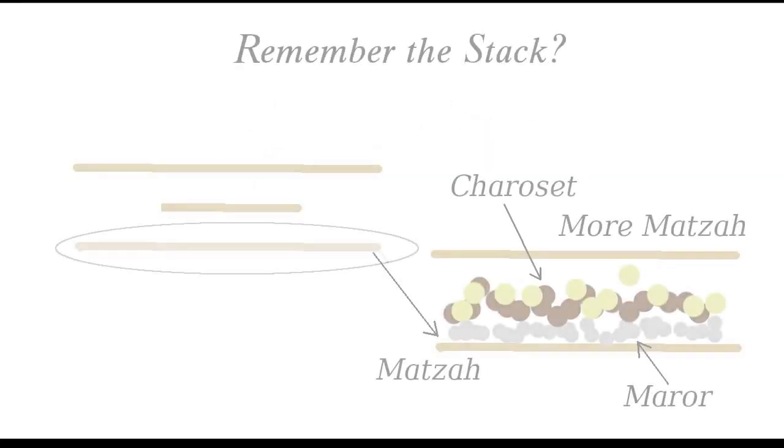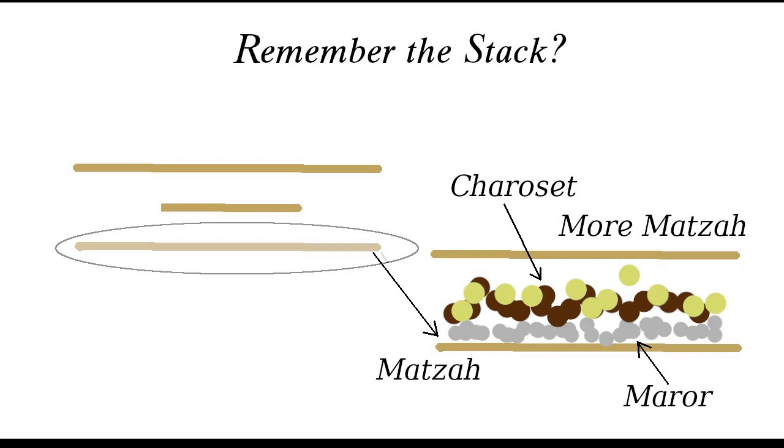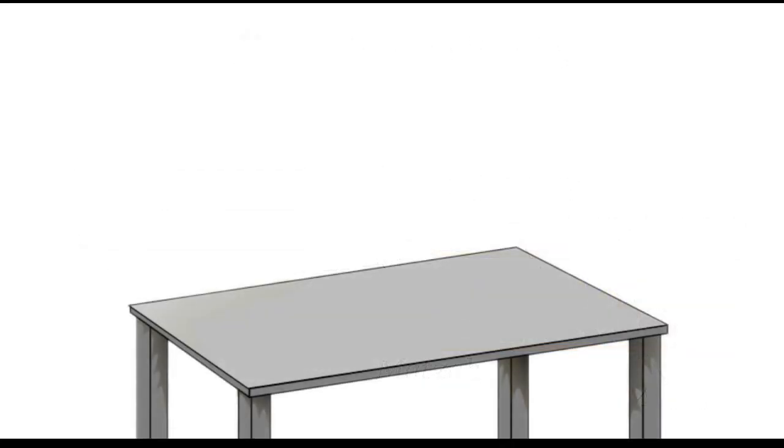Then we can put some haroset and maror between two pieces of matzah and eat them like a sandwich. You can begin with the bottom matzah from the stack. There's no blessing for this combo. And finally, the meal is served.